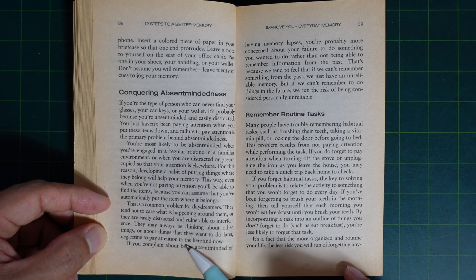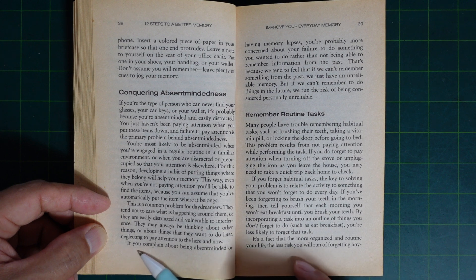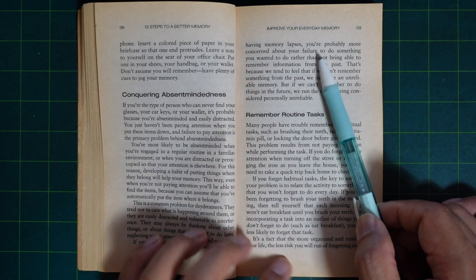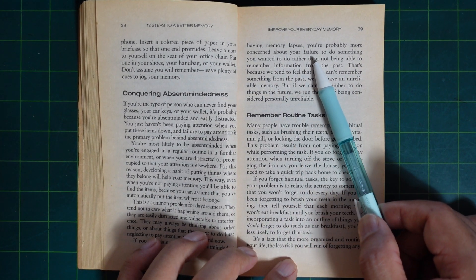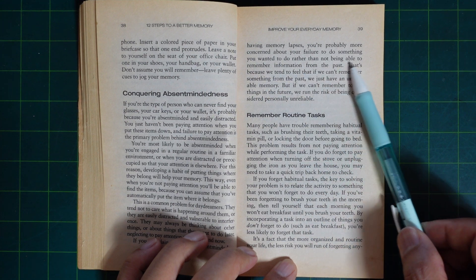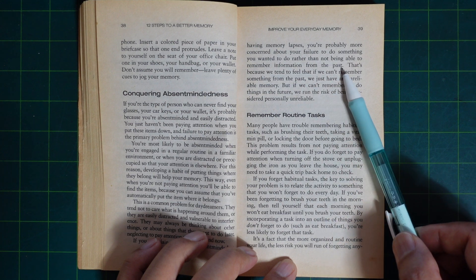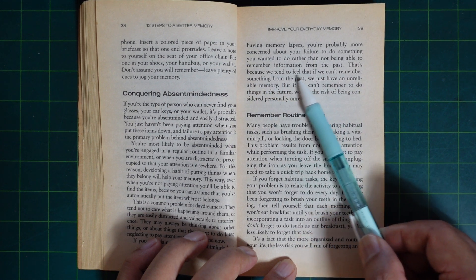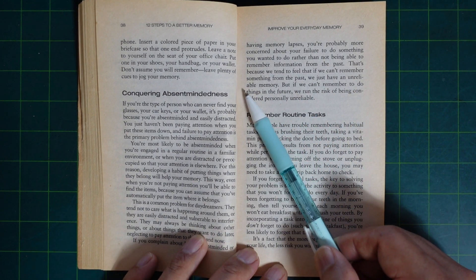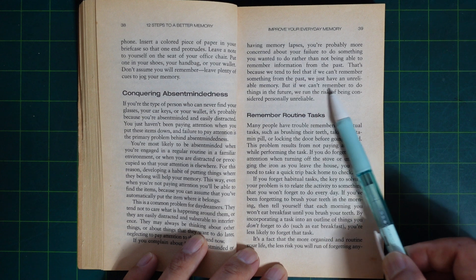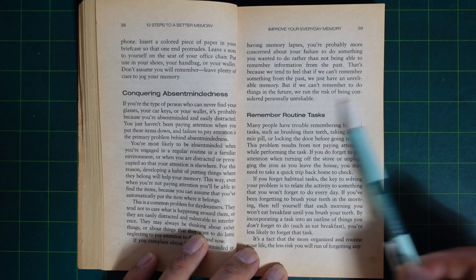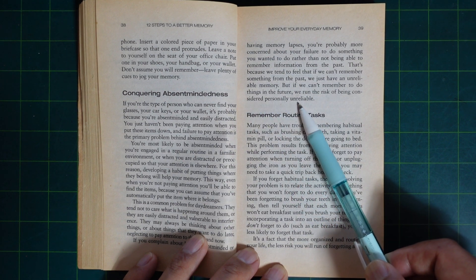Neglecting to pay attention to the here and now. If you complain about being absent-minded or having memory lapses, you are probably more concerned about your failure to do something you wanted to do rather than not being able to remember information from the past. That's because we tend to feel that if we can't remember something from the past, we just have an unreliable memory. But if we can't remember to do things in the future, we run the risk of being considered personally unreliable.